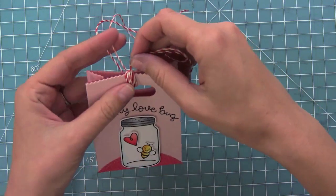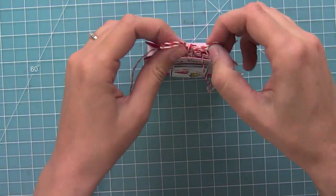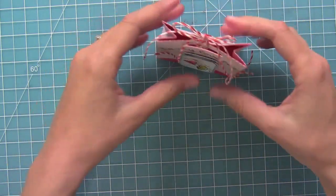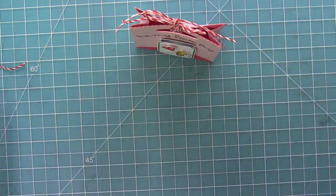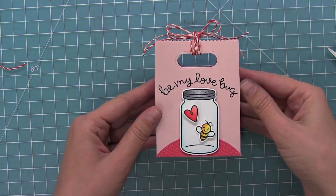Here I have some of our coral and peppermint lawn trimmings and I just cut a really long piece, tied it around a ton of times and then put a bow right on top and it really finishes off the goodie bag.